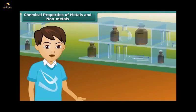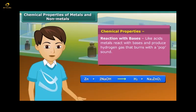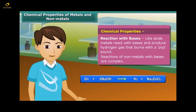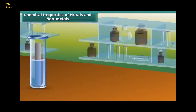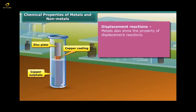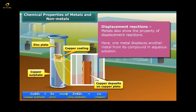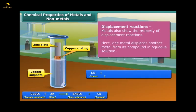You will be surprised to know that like acids, metals also react with bases and produce hydrogen gas. Non-metals react with bases complexly. Besides these chemical reactions, metals also show the property of displacement reactions. We can see a displacement reaction here, in which one metal is displacing another metal from its compound.